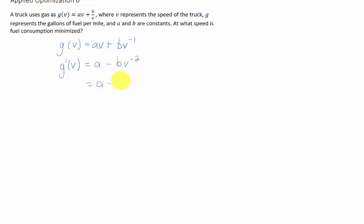You could write this as b over v squared in the denominator if you'd like, but to find our critical points we're going to set that derivative equal to zero and solve for v.